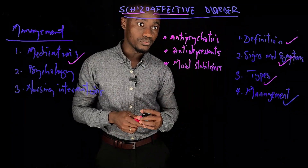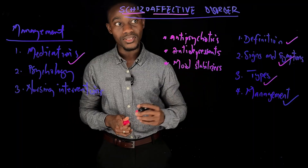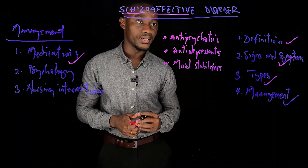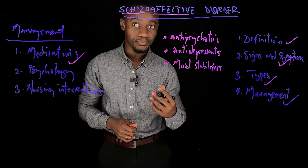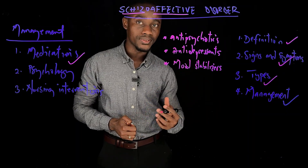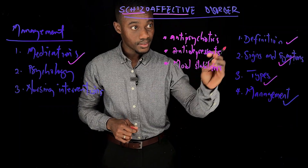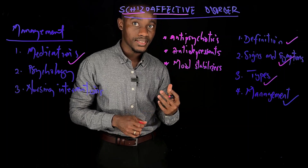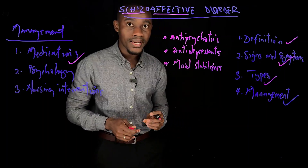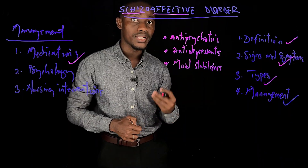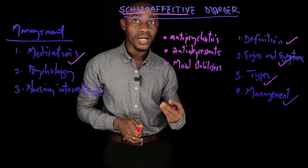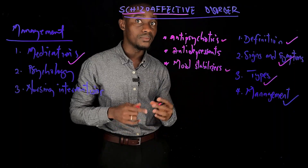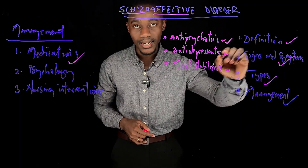Antipsychotic medications are used in the management of psychotic disorders such as schizophrenia, antidepressants are used in managing depression, and mood stabilizers are used in managing bipolar disorders. The combination of medications an individual receives depends on their type of schizoaffective disorder. For the bipolar type, they receive antipsychotics with mood stabilizers; for the depressive type, they receive antipsychotics and antidepressants.